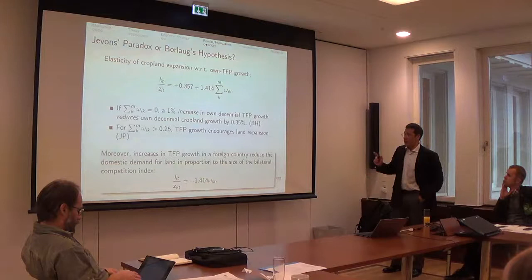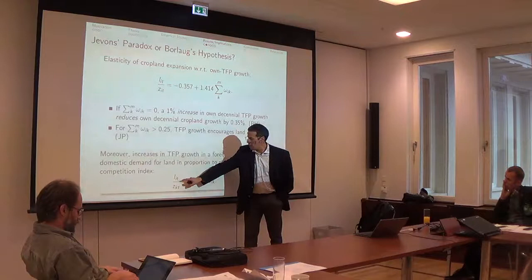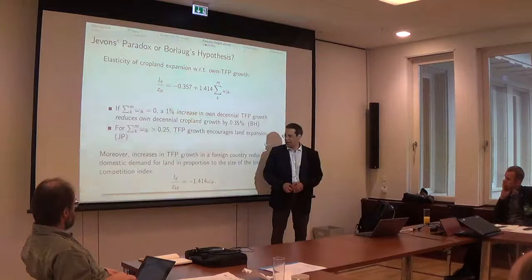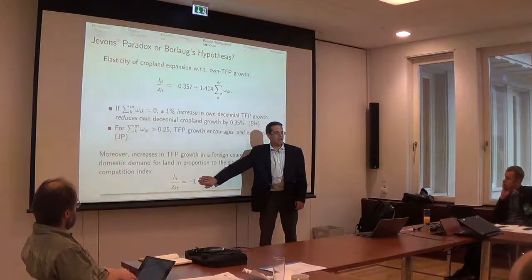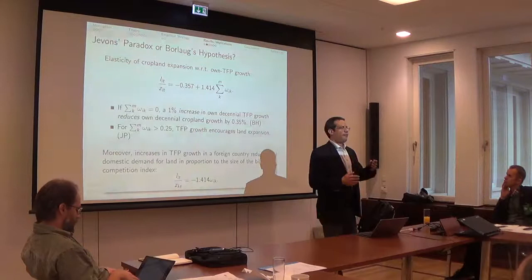I'll show that by country in a second. But we also have a very interesting parameter here that is how much land use change a TFP shock in country k causes in country i. And that's going to be this number that we estimated times the competition index. If two countries are fully unrelated, there will be no TFP transmission whatsoever. If two countries are very deeply integrated, they'll have an effect.